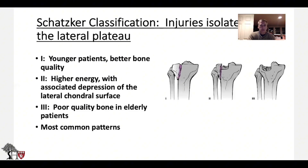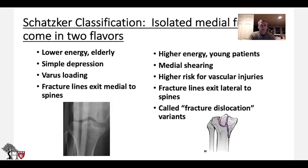Younger patients often have better bone quality, whereas higher energy with associated depression of the lateral chondral surface is relatively easier to fix in younger patients. As bone quality gets more poor in the elderly, it can become more common. The type 1, 2, and 3 are the most common. There's also the medial type 4 Schatzker — a low-energy elderly patient may have a simple medial depression caused by varus loading, and as they get higher energy with medial shearing, they become higher risk for vascular injuries.